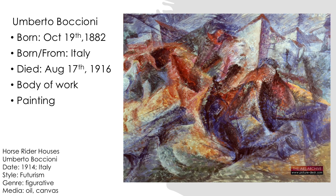Umberto Boccioni was born in Italy in 1882. His parents were also natives of the Italy region. In 1901, Umberto Boccioni set out to attend the Academy of Fine Arts in Rome. Over his career, he published over 90 pieces of art before tragically dying while volunteering for the army, where he was trampled by a horse.